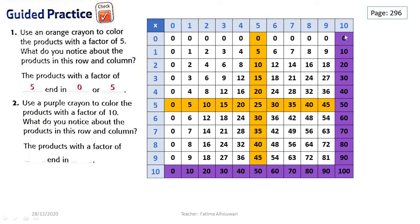They are the products with a factor of 10. They are: 0, 10, 20, 30, 40, 50, 60, 70, 80, 90, and 100. Now look at these numbers, grade 3. All of them end in 0. So the products with a factor of 10 end in 0.